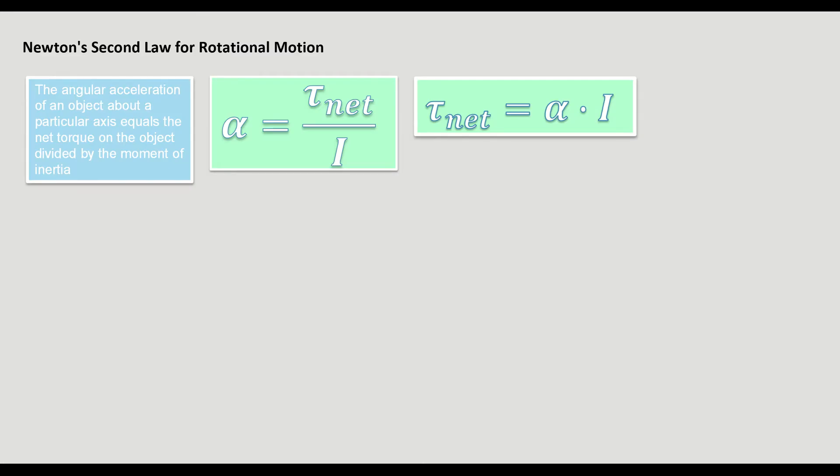Newton's second law of rotational motion. The angular acceleration, which is our α right there, our alpha of an object about a particular axis equals the net torque on the object divided by the moment of inertia. So we can go to our baton. It's swinging around and we're wondering what's the acceleration of that, the angular acceleration.